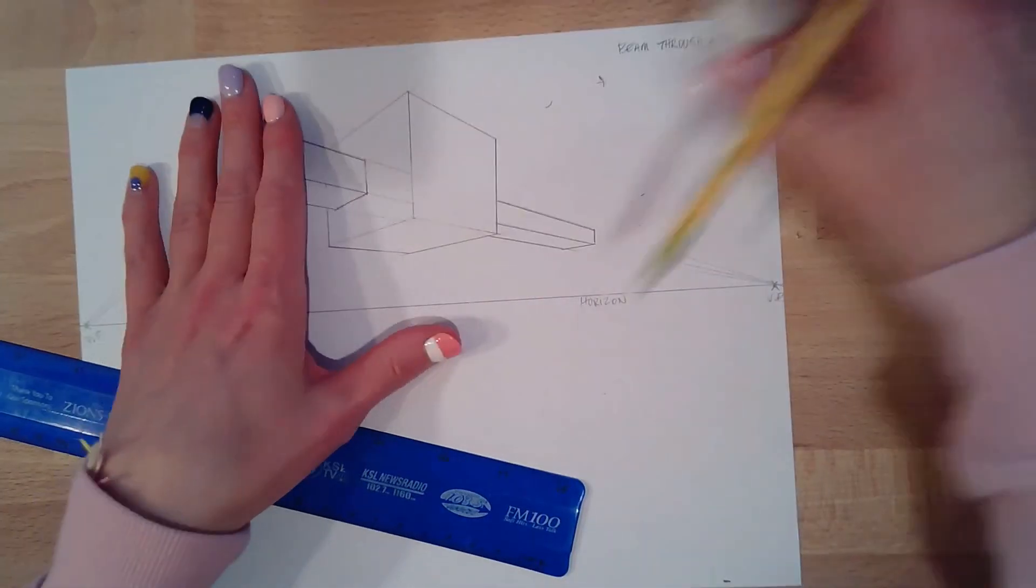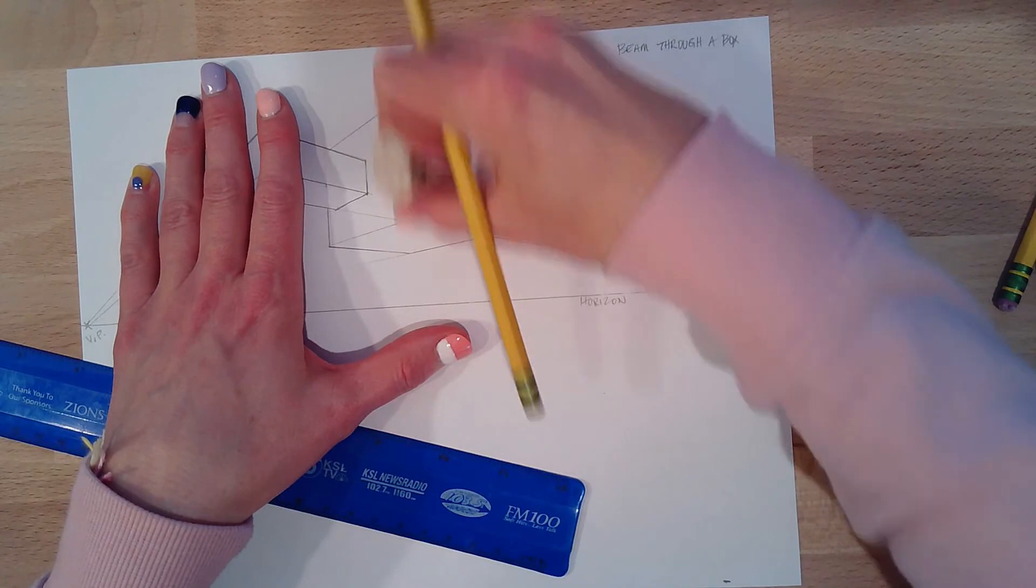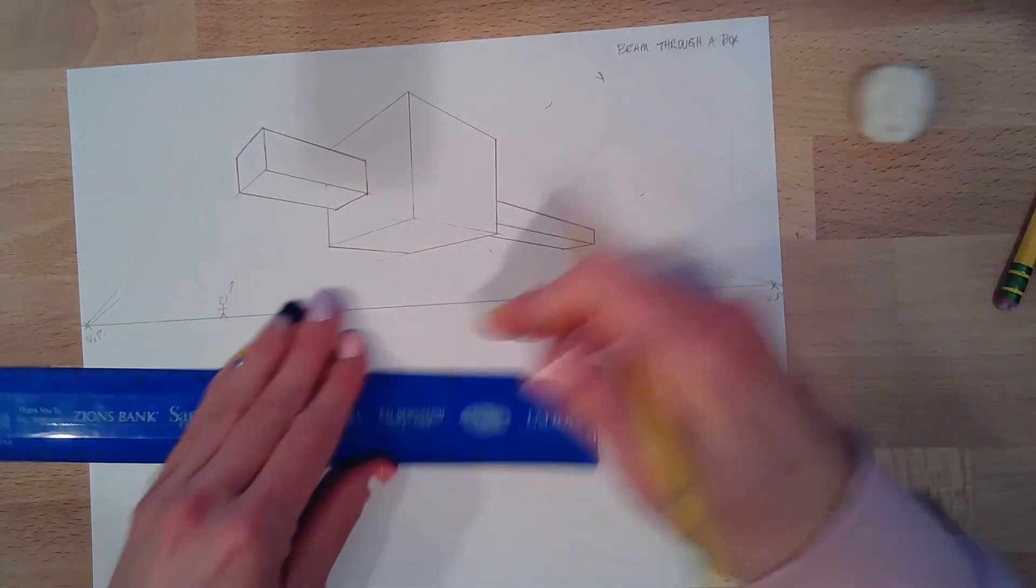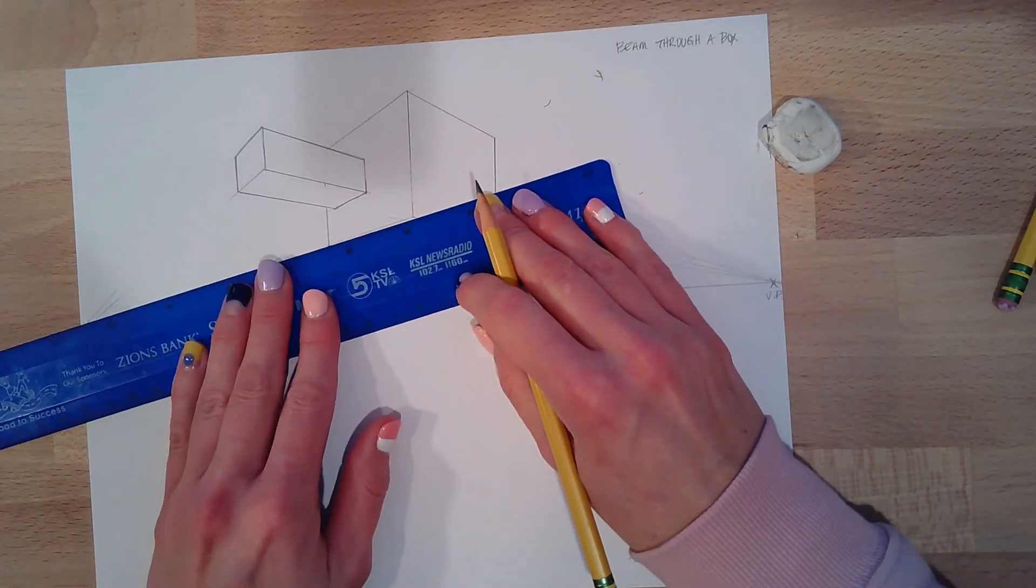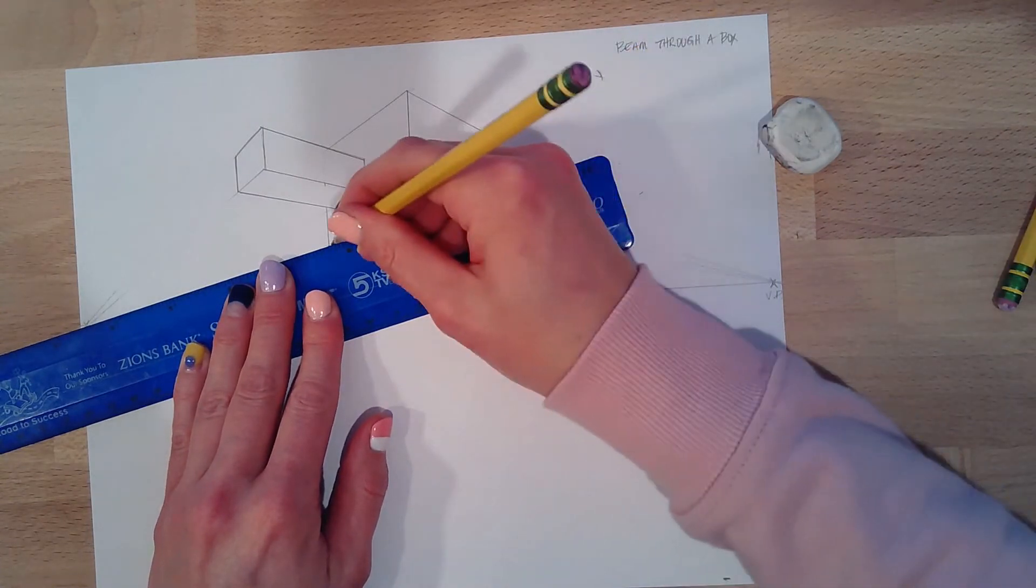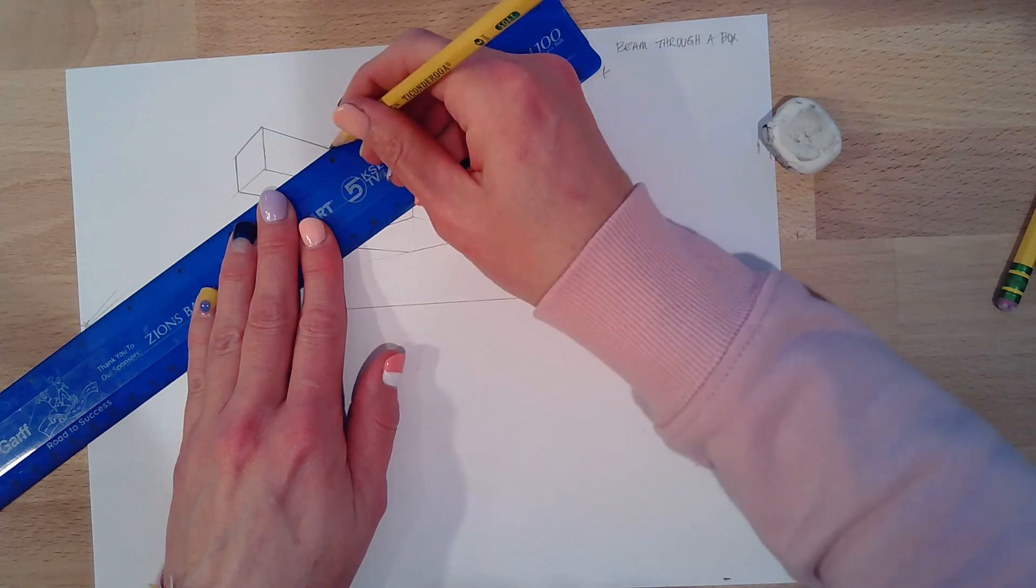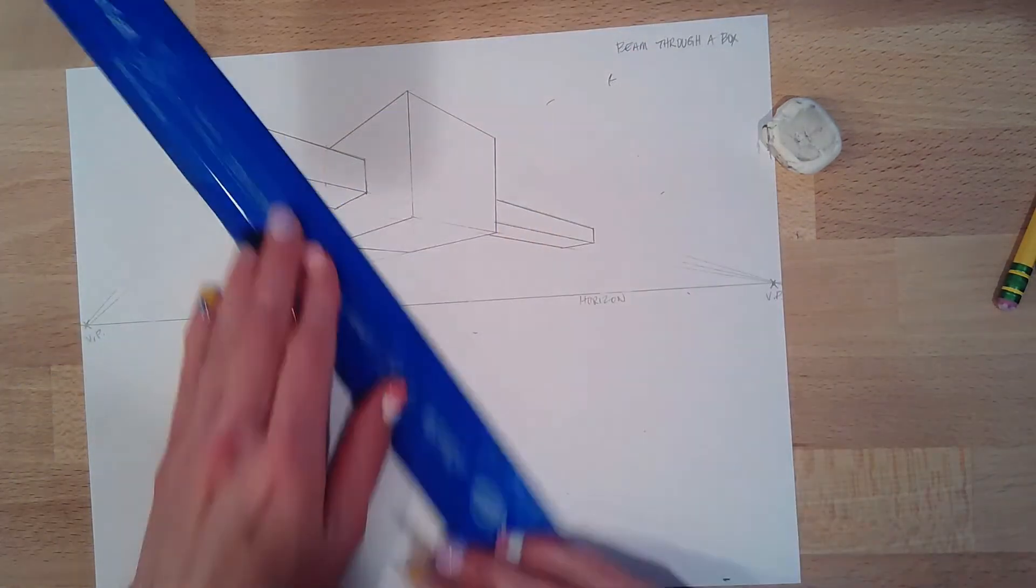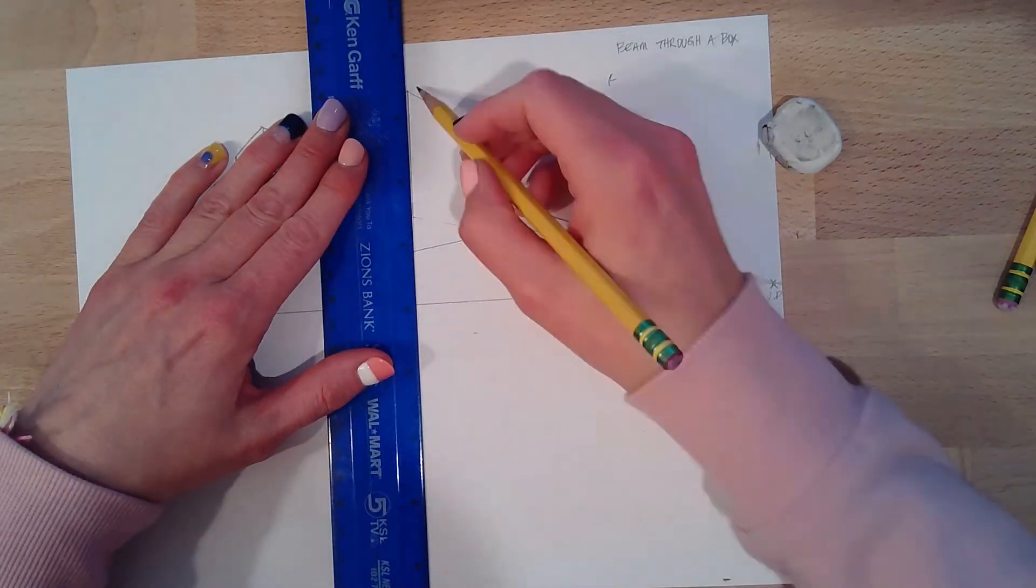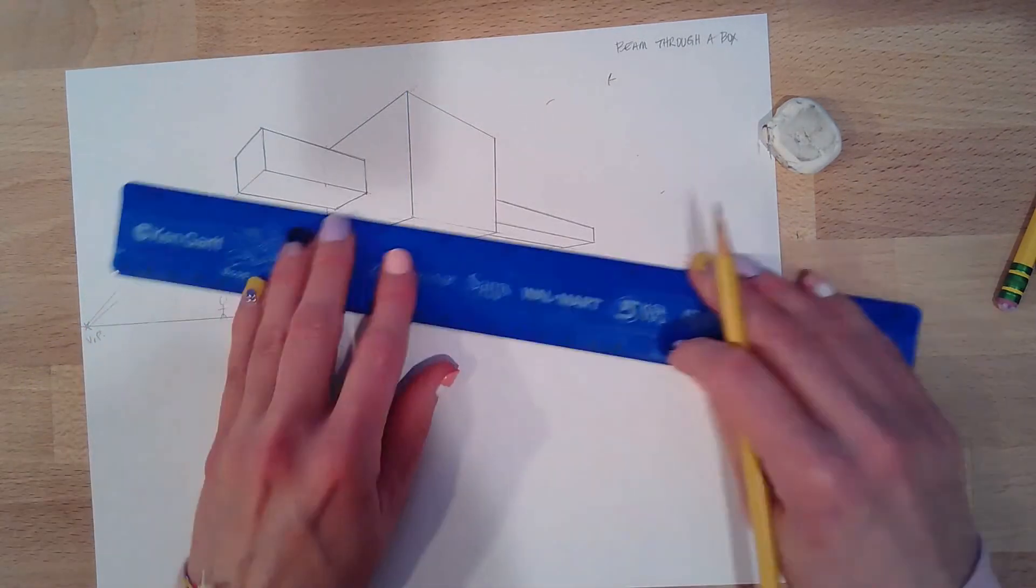So now I want to go and erase my lines here and darken this one up again, because as I've erased, I've lightened up some of these lines and we don't want that. Make sure you stay true to your original lines as not to change your vanishing point, because that would be sad and look very confusing. And then no one would think you're a magical artist.